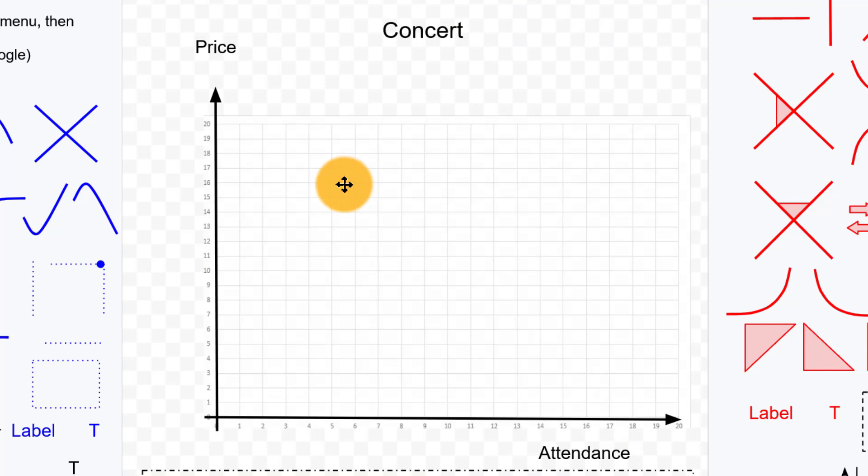Now, which of these would be the independent variable? Or sometimes we'll call it the explanatory variable. And which of these would be the dependent variable? Does the price they charge depend on how many people go? Or does how many people go depend on the price? Right. Since the price being higher will cause fewer people to want to go, we would probably say the price is the independent variable. Attendance is the dependent variable.